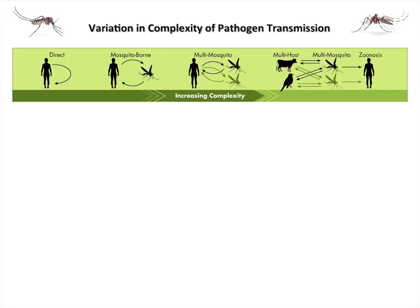I'll talk some about Zika virus, but mostly about dengue, which really falls into this one mosquito species. But it can get more complicated — most malaria transmission cycles have multiple vectors involved, increasing the complexity. And then we go all the way to something like West Nile virus, where there are lots of different bird species and lots of different mosquitoes involved, and occasionally it spills out and infects a human. That's so complicated that sometimes I don't really understand how my friends working on that can make sense of it.